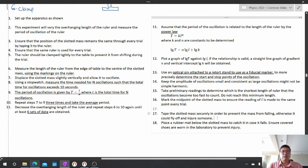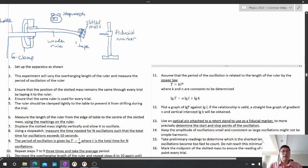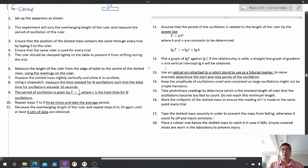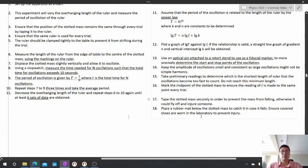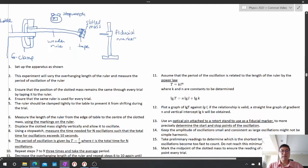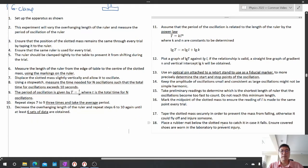Finally, we come to safety. What could happen? Because this mass is shaking very violently, it could presumably fly off and hit somebody. So we tape the slotted mass securely to prevent the mass from falling, otherwise it could fly off or injure someone. If it does fall, we'll put a rubber mat below the slotted mass to catch it in case it falls and ensure covered shoes are worn in the lab to prevent injury.